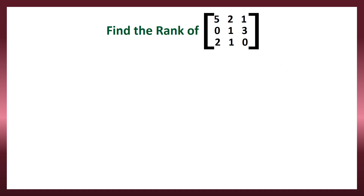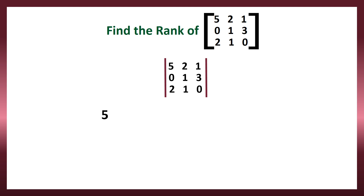Let us find the rank of this matrix. It is a 3x3 matrix, so the highest minor of that matrix is the determinant value of all the elements in the matrix. The highest minor is equal to the determinant of that matrix. If we are asked to find the minor of a particular element, such as the element 5, we delete the row and column containing 5 and find the determinant of the remaining elements.